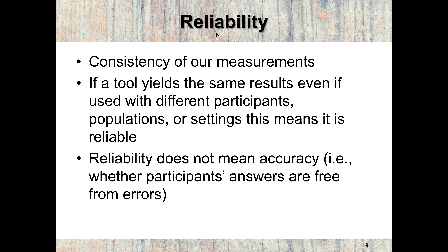Next, we discuss reliability. Reliability means that anytime we do the same thing over and over, we get the same result — then we know it's reliable. This does not mean it's correct or wrong. Reliability is about testing the tools we are using. If I'm using a tool in the wrong way, but every time I do it the same way I get the same result, that means the tool is reliable. Reliability is the consistency of our measurements. If a tool yields the same result even with different participants, populations, or settings, it is reliable.